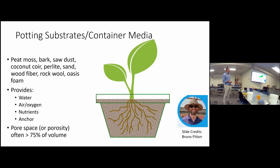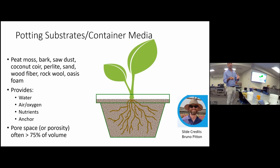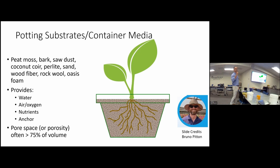If you over-irrigate and all the pores are occupied by water, there is no space for air. Roots cannot grow in saturated media. We often pick these materials to have really high pore space, or porosity, which I'll define in a minute. I should mention that I borrowed these slides from my friend Dr. Bruno Pitten — at least I put his name here as an apology.